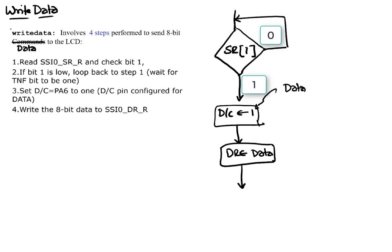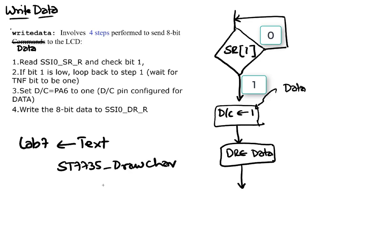That's all for the ST7735. In Lab 7 we'll be using it in text mode, so all you really need to know is the ST7735_DrawCharacter function and a draw string function. These are straightforward, and you will build on top of them by writing your own functions called LCD_OutDec and LCD_OutFix.